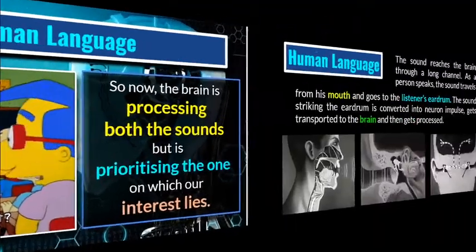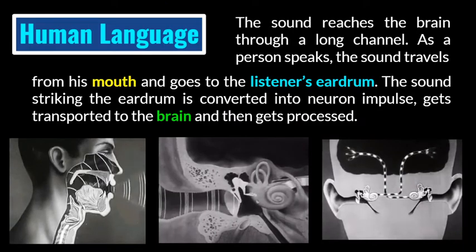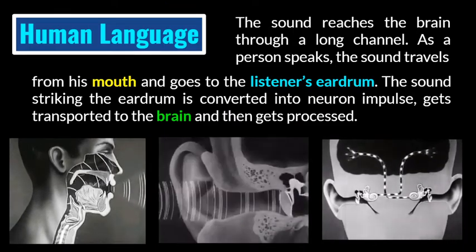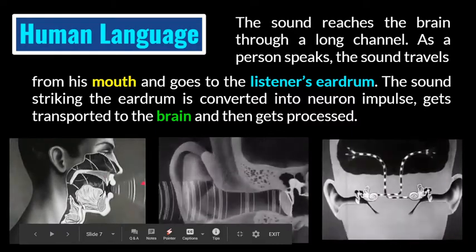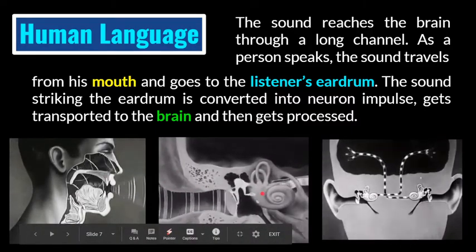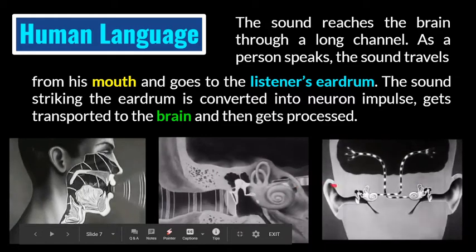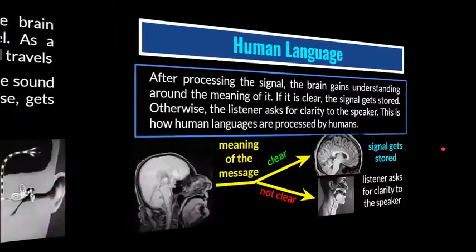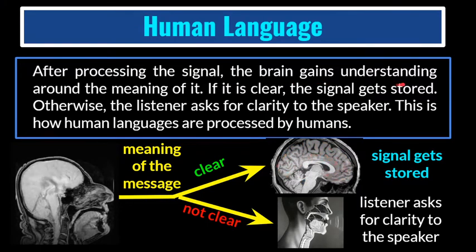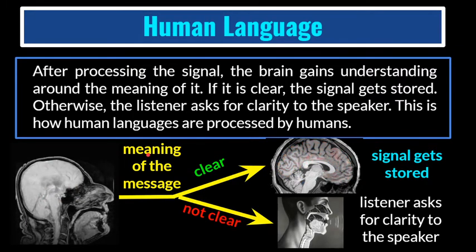Now, how does human language work with our body? The sound reaches the brain through a long channel. As a person speaks, the sound travels from his mouth to the listener's eardrum. The sound striking the eardrum is converted to a neuron impulse, and these impulses get transported to the brain and then get processed. After processing the signal, the brain gains meaning from it, and if the meaning is clear, the signal gets stored in the brain.